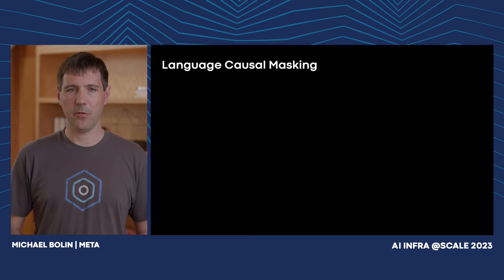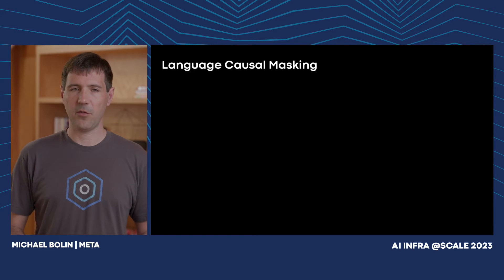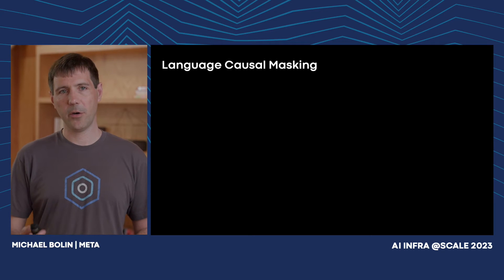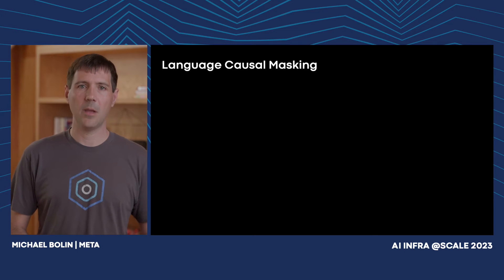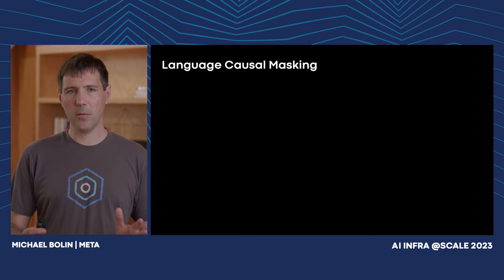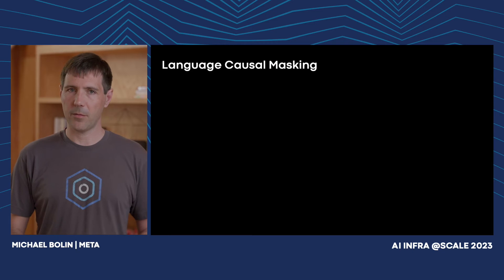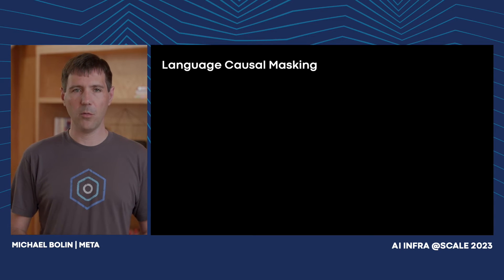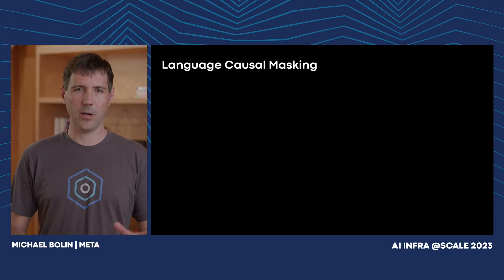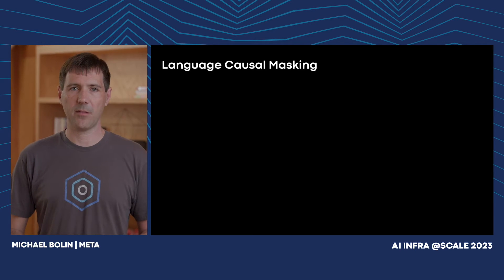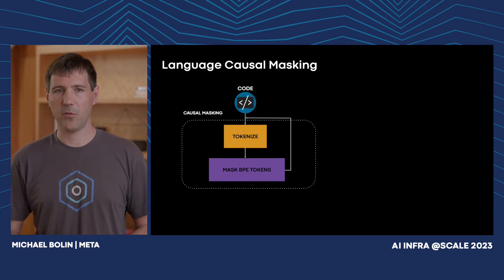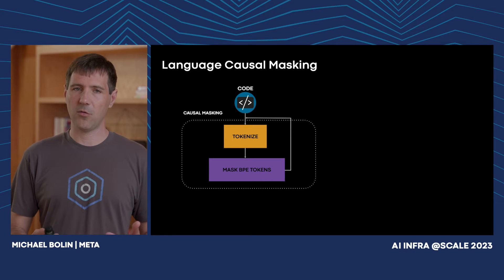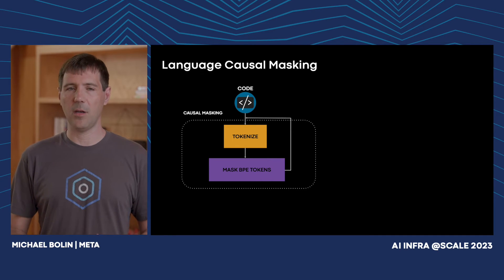In our current Code Compose integration in VS Code, we only request completions when the user's cursor is in an empty block or if it occurs at the end of a line after a hard-coded set of trigger characters, such as a period or parenthesis. In practice, this means we provide completions only in a limited set of circumstances. However, the original encoder model was trained using a causal masking objective in which source code is tokenized using byte-pair encoding before the region to be masked is selected. Because mask boundaries were not guaranteed to align with trigger character boundaries in the original source code, we discovered that this led to a mismatch between training and inference that resulted in poor mid-word predictions.